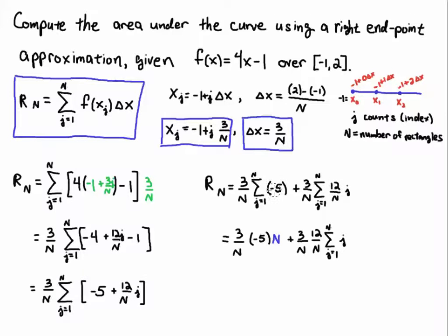How many minus fives are there? It's minus five added n times, so that's minus five times n. Then I factor the twelve over n out of the remaining sum, which leaves the power sum: the sum from j equals one to n of j.